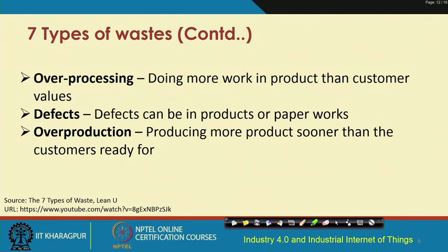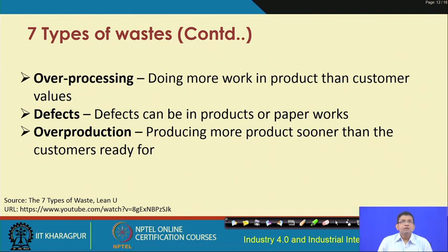The fifth waste is over-processing — doing more work on the product than what the customer actually finds value in. The production system should address only the customer's precise needs, producing exactly the product or service required. Having extra features that the customer does not need is not desirable.